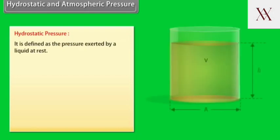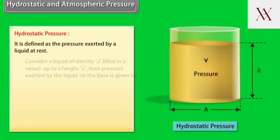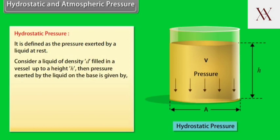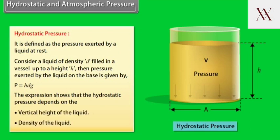Hydrostatic and atmospheric pressure. Hydrostatic pressure is defined as the pressure exerted by a liquid at rest. Consider a liquid of density D filled in a vessel up to a height H. Then pressure exerted by the liquid on the base is given by P equals HDG. The expression shows that hydrostatic pressure depends on the vertical height of the liquid and density of the liquid.